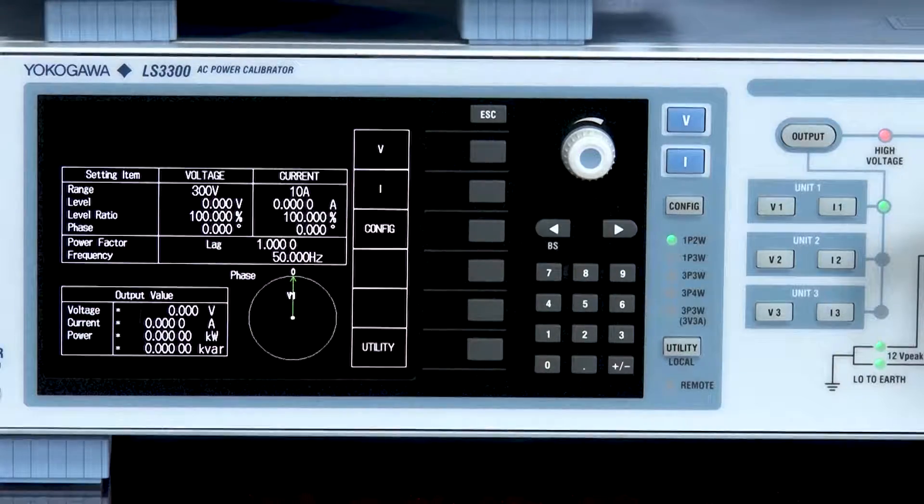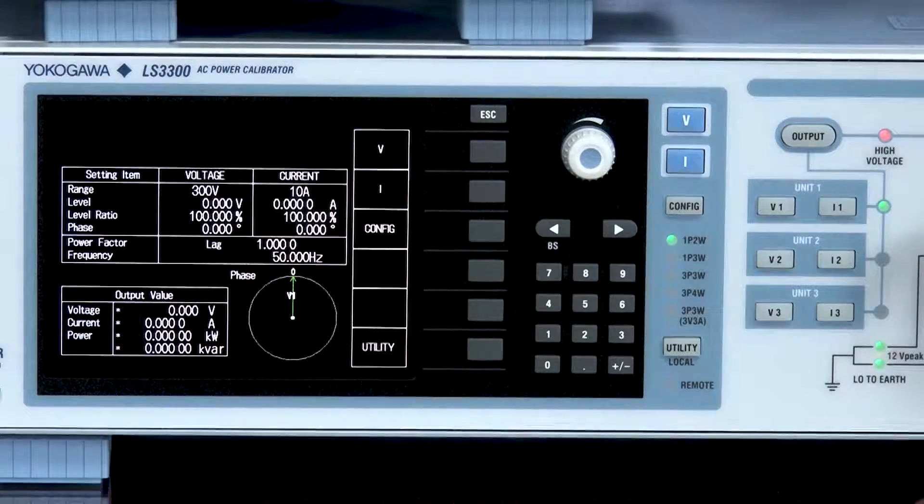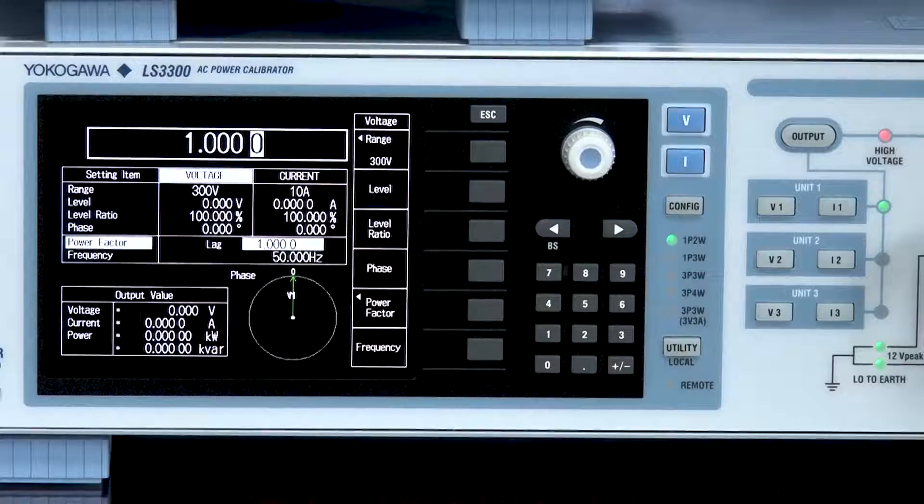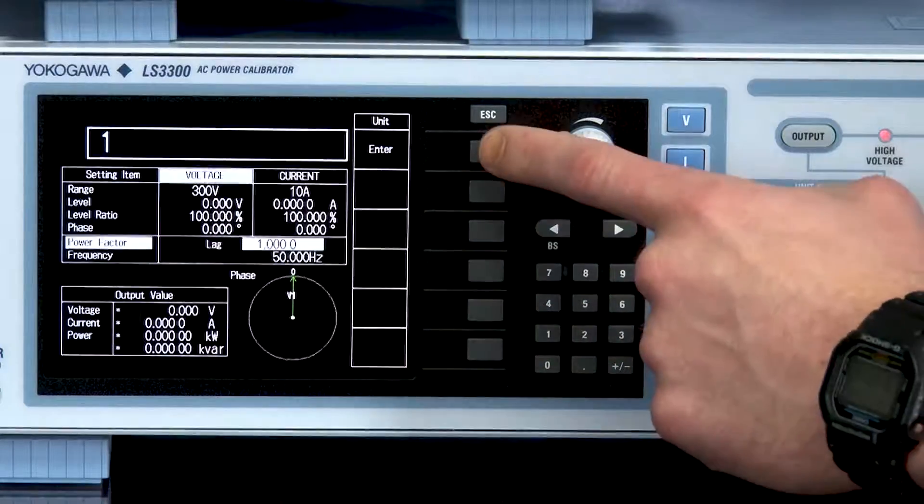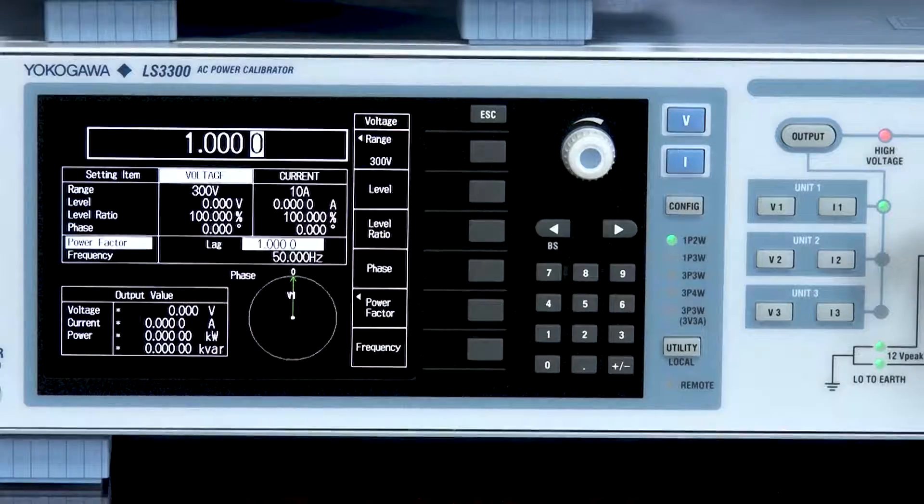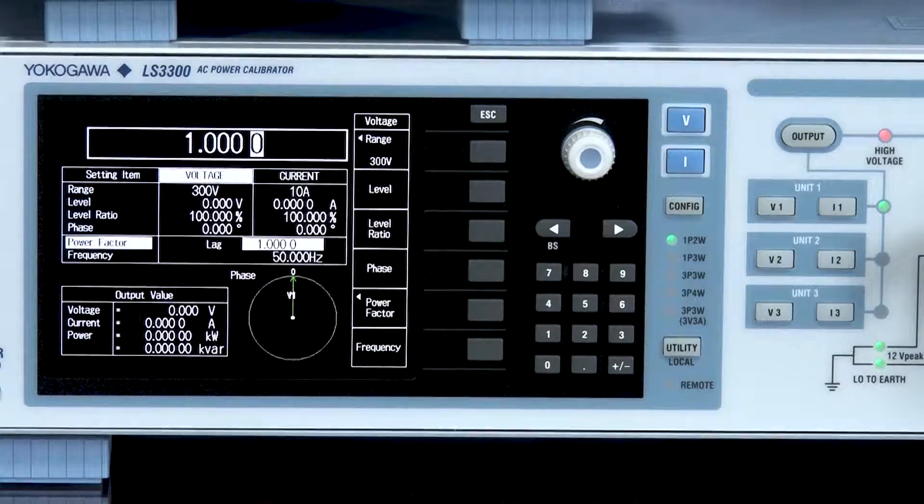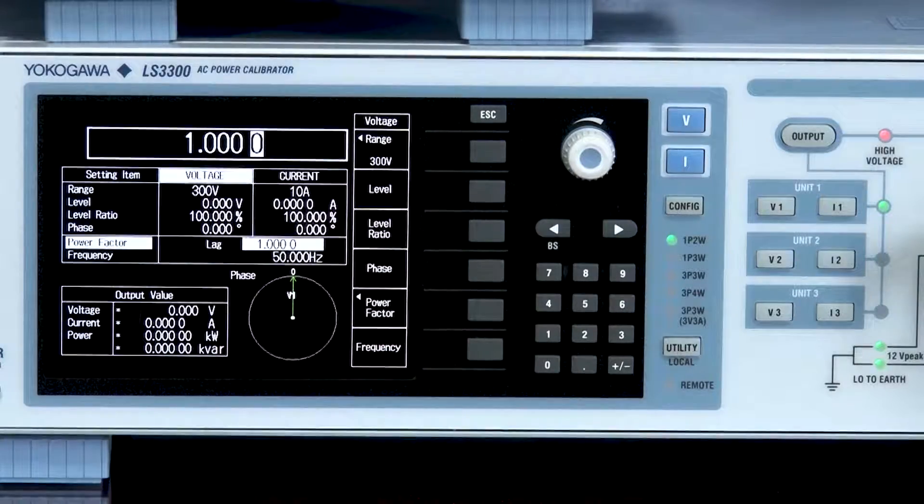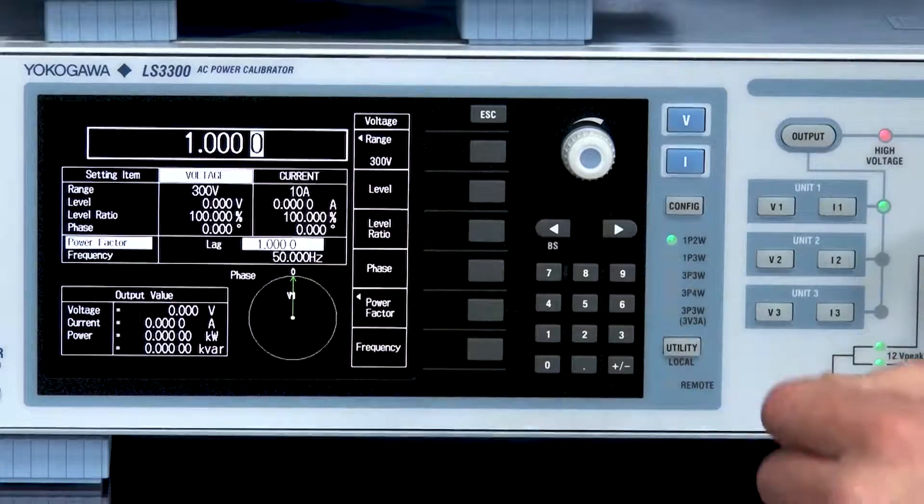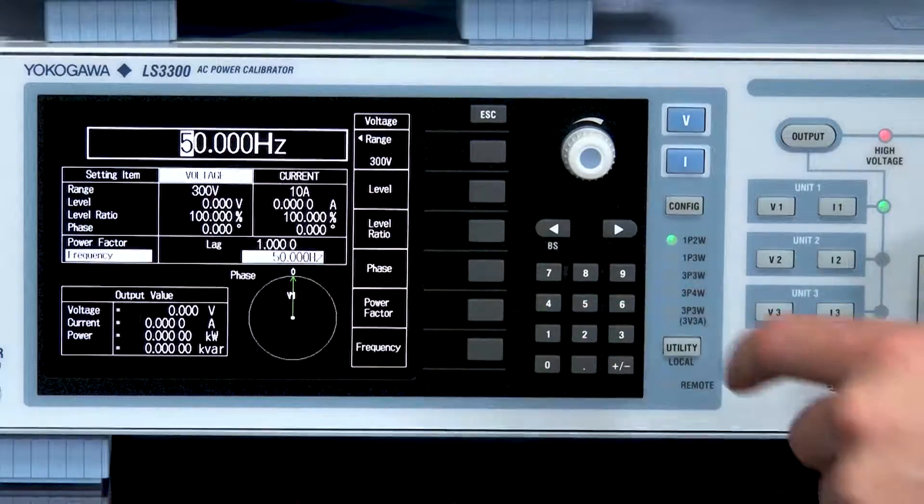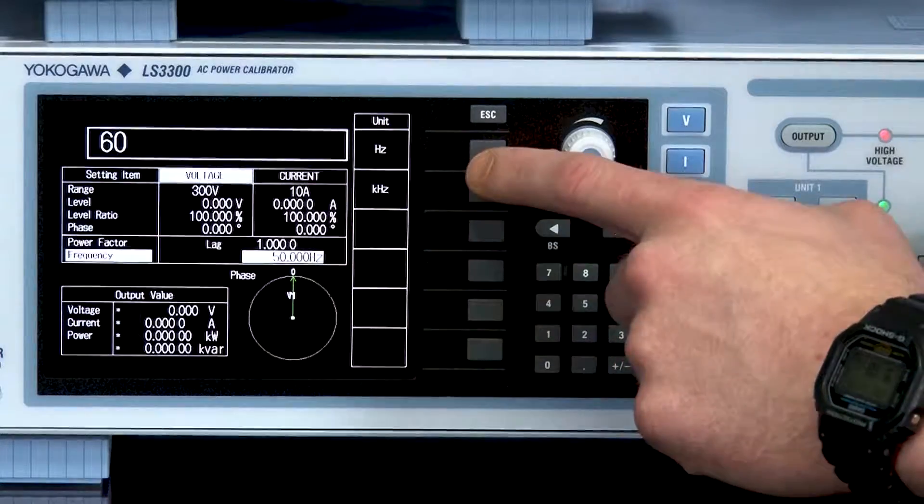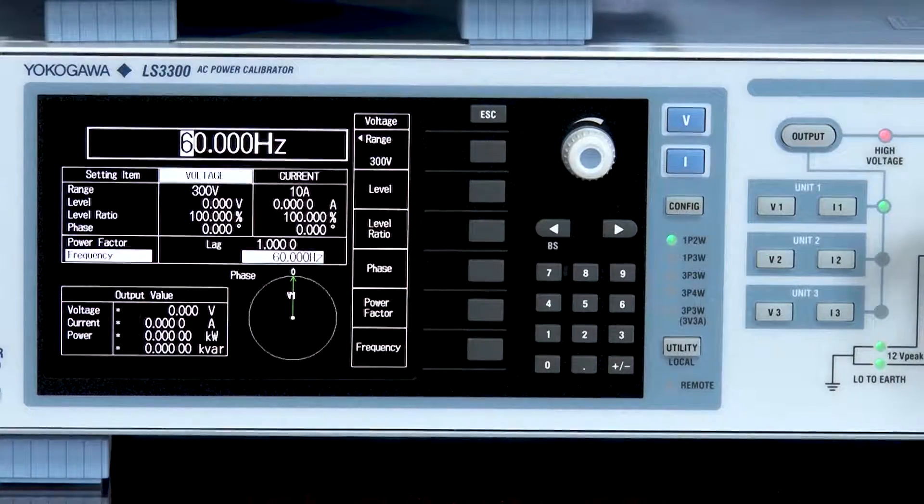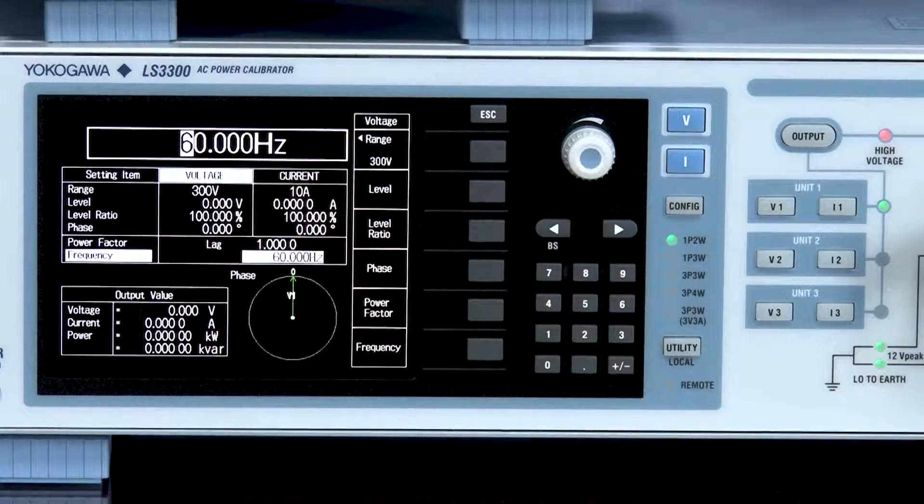Finally I'll set the power factor to one by pressing the soft key next to the power factor. This can be found in the voltage or current menu followed by power factor, enter in your value, pressing enter. The LS3300 allows for the power factor to be set from negative one to zero to positive one. We will also set the frequency during this time by going into voltage or current, selecting frequency, and entering in 60 Hertz for this test. This instrument allows for phase angle to be selected from zero to 359.99 Hertz.